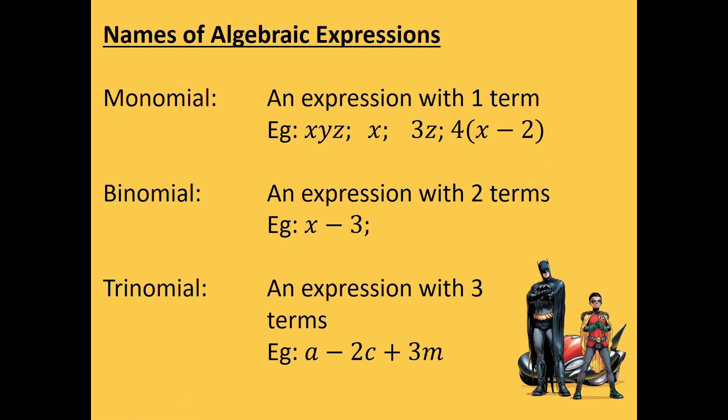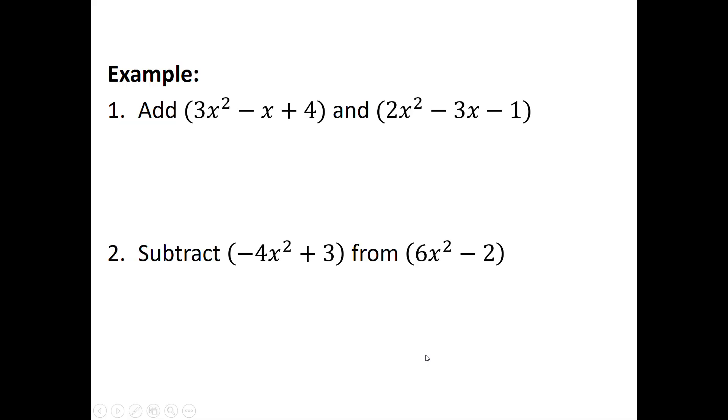My names of algebraic expressions. I've got a monomial, so that mono meaning one, so a monomial would be an expression with only one term, so xyz. There's no pluses or minuses there. You're saying x times y times z, so it's only one term. Binomial would be an expression with two terms, so x minus 3. The two terms are separated by that negative, so terms are always separated by either negative or positive. Then you've got your trinomial, tri meaning 3, an expression of three terms. So a minus 2c plus 3m, so there's your three terms.